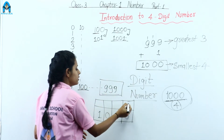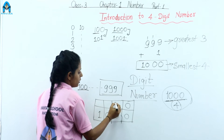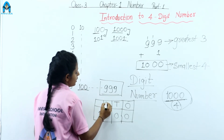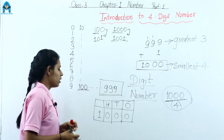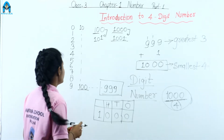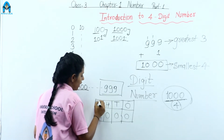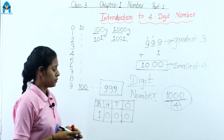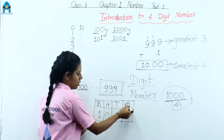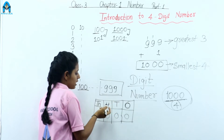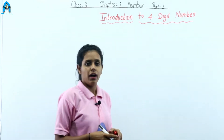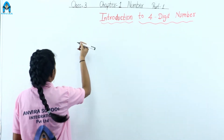In the place value chart, this is the ones place, this is called the tens place, this is the hundreds place, and now this new place is called the thousands place. So the places are: ones, tens, hundreds, and thousands.